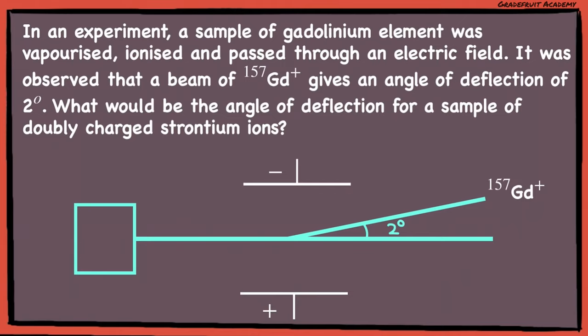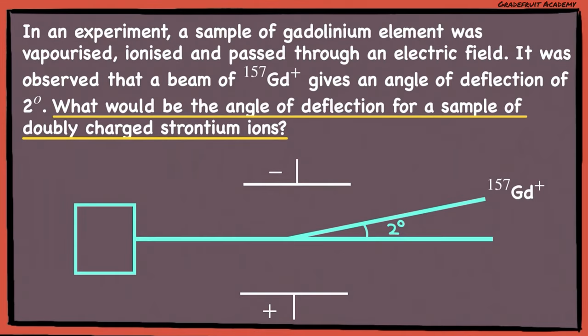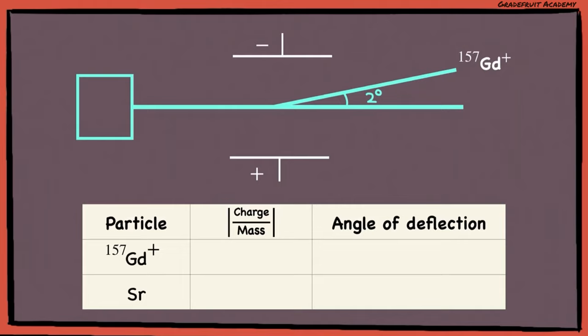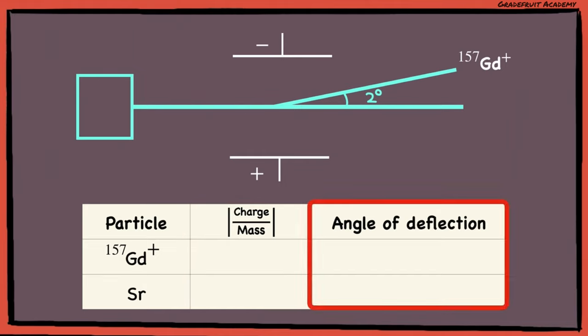Let's take a look at one more question. If you don't know where to start, always go back to what the question wants, because ultimately nothing else matters if you don't answer the question. In this case, what would be the angle of deflection for a sample of doubly charged strontium ions? What we can do is organize all the information given in the question into a table, with a column for the charge-to-mass ratio and another for the angle of deflection. I would highly recommend this method as it is very organized, saves time, and almost 100% guarantees your marks.